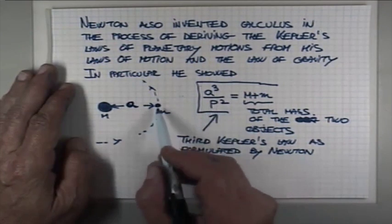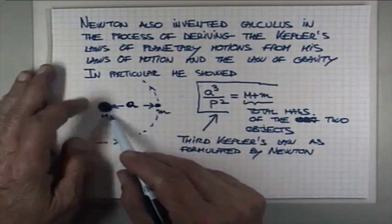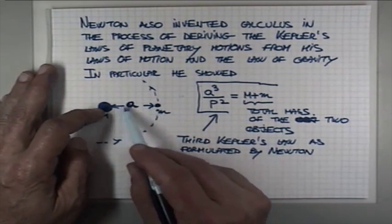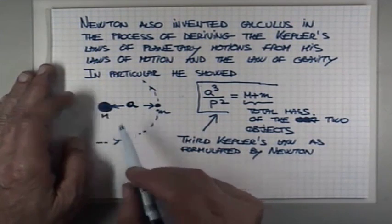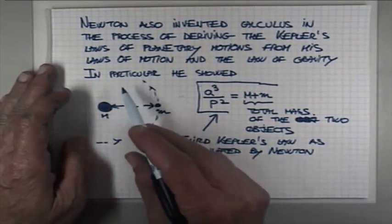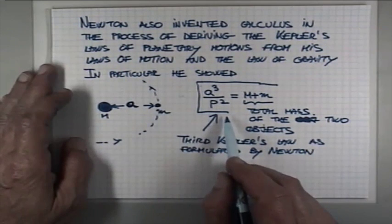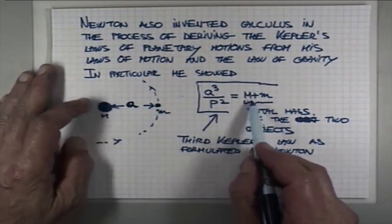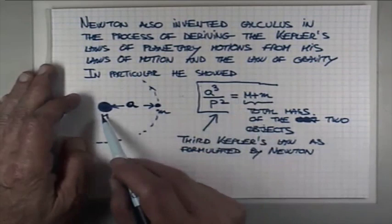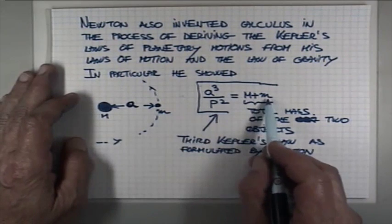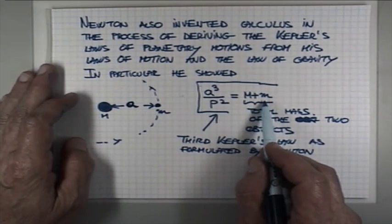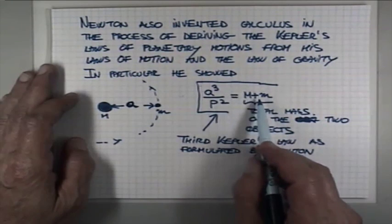You can, for instance, in the case of the Earth - say this is Earth and this is our Moon - you can determine the distance between the Moon and the Earth, you can measure the Moon's orbital period, and then you can find out the total mass of the Earth and the Moon. And because the Moon is much, much smaller than the Earth, you practically get the mass of the Earth.